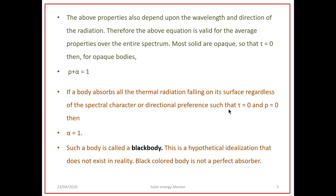Most solids are opaque — for example, a shiny metal surface. When the surface is opaque it transmits no light, so τ = 0, and for opaque bodies ρ + α = 1. If a body absorbs all thermal radiation falling on its surface such that τ = 0 and ρ = 0, then α = 1. Bodies for which α = 1 are called black bodies.